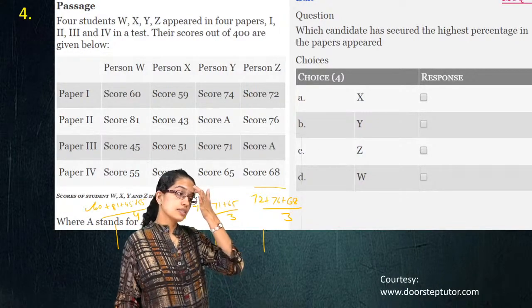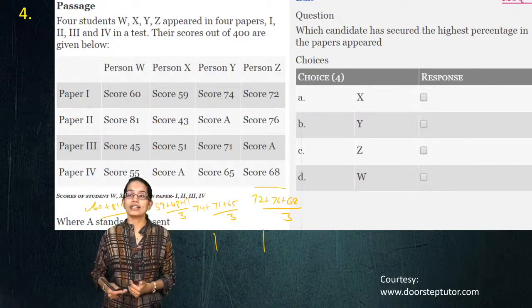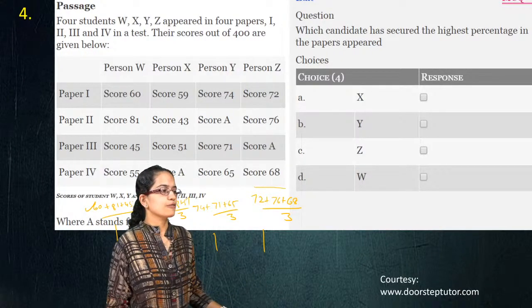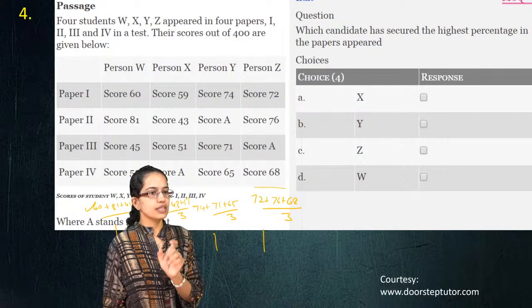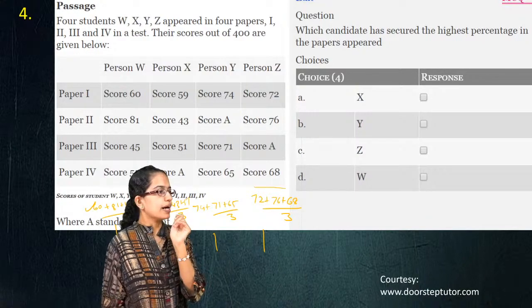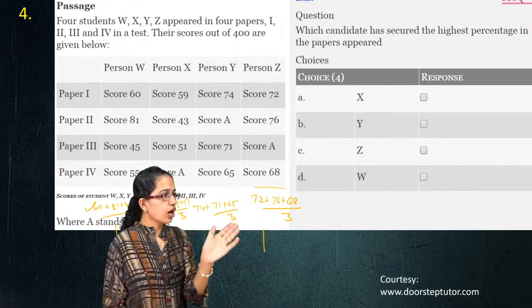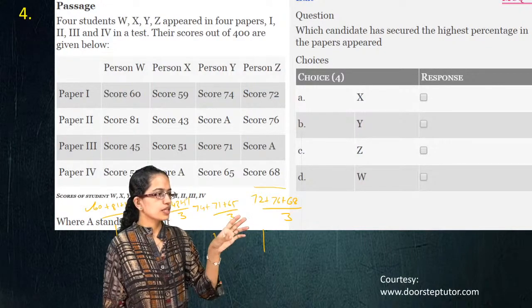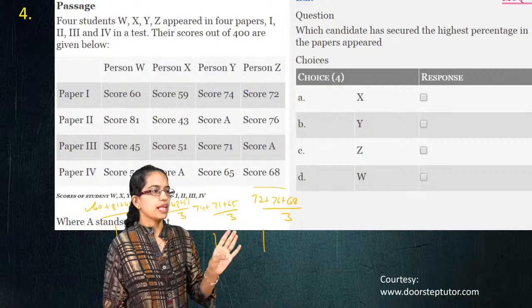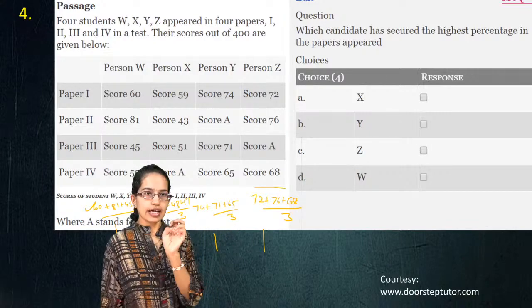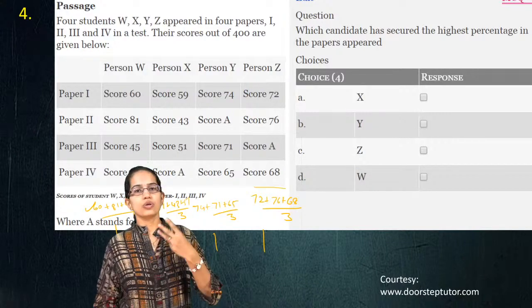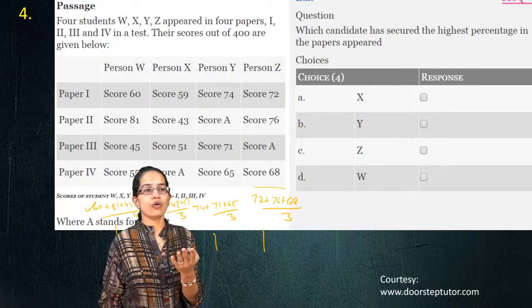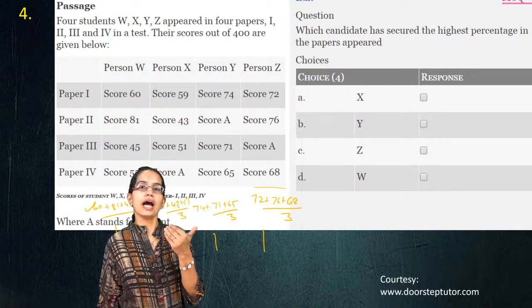From the same table there could be another variant: find the candidate with the highest percentage across all papers. In that case, you would not limit to papers appeared — if it says 'papers appeared' you use only three, but if it says 'across all papers' or 'across the examination' you divide by four. Be very careful about the language of the question — this distinction is very important.